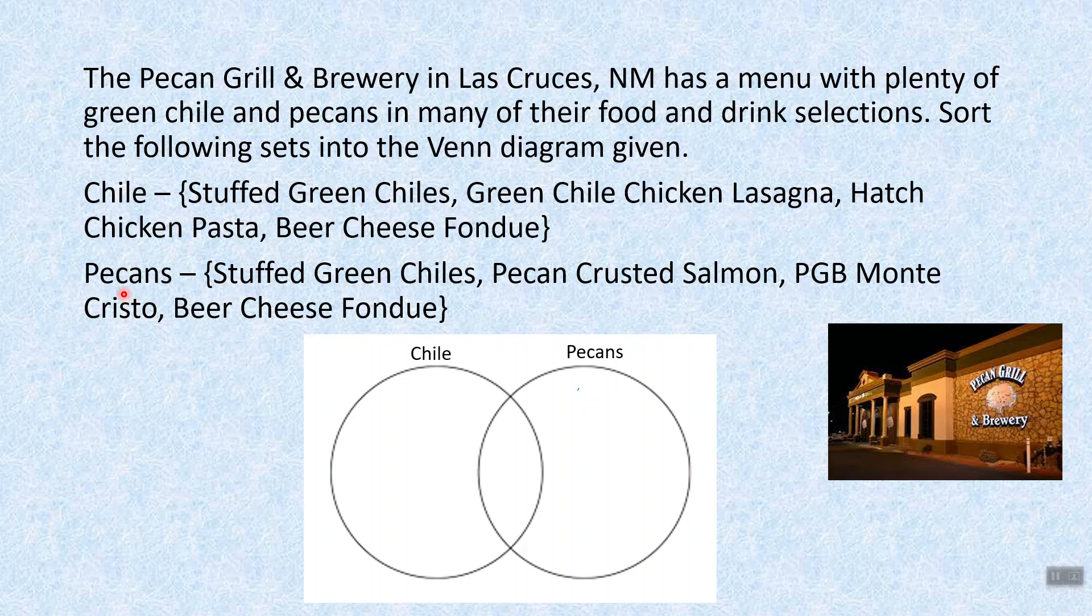In the category of foods that have pecans, I chose stuffed green chilies, pecan crusted salmon, which is heavenly, PGB Monte Cristo, and the beer cheese fondue.